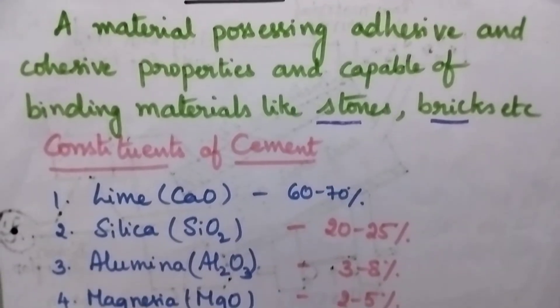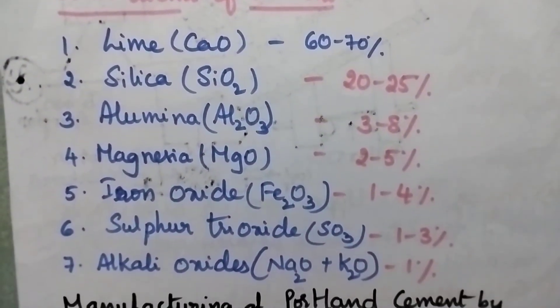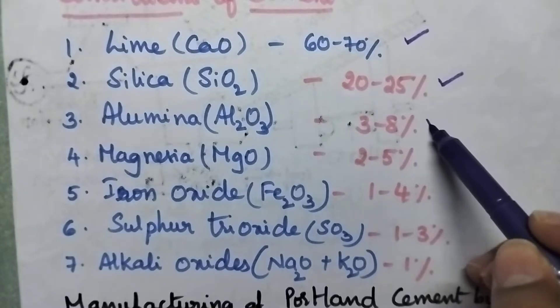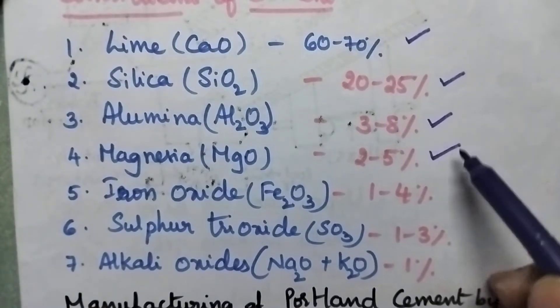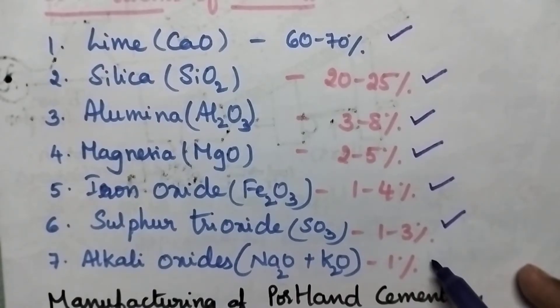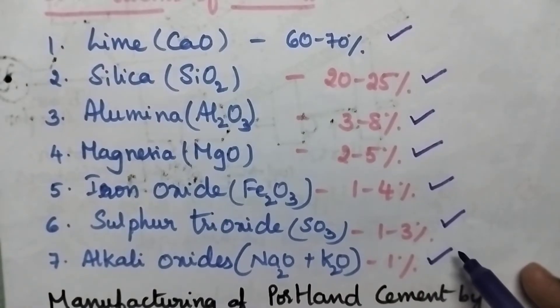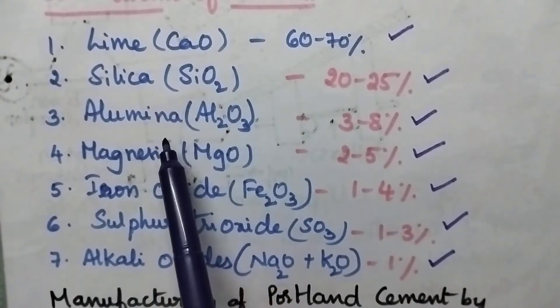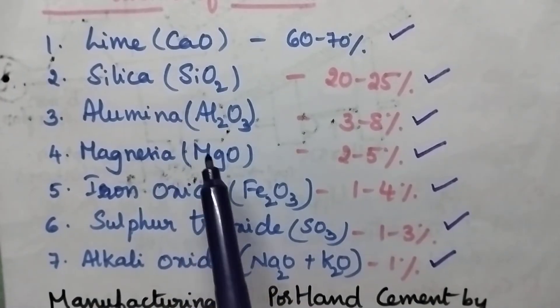Coming to the major constituents of cement, it generally includes lime, silica, alumina, magnesia, iron oxide, sulphur trioxide, and alkali oxides. The major constituents are lime, silica, alumina, and magnesia.